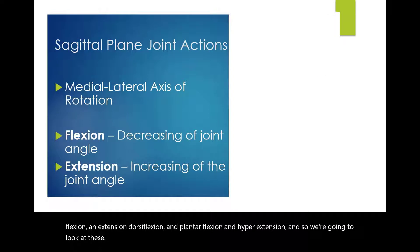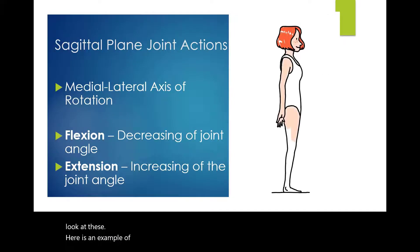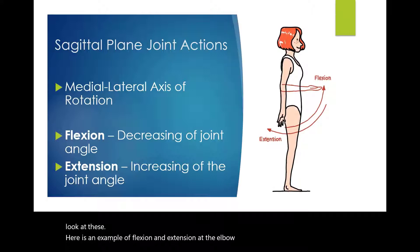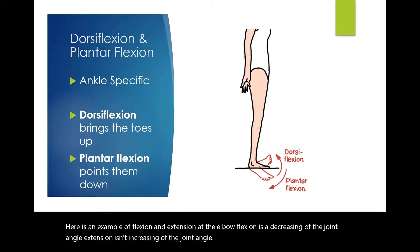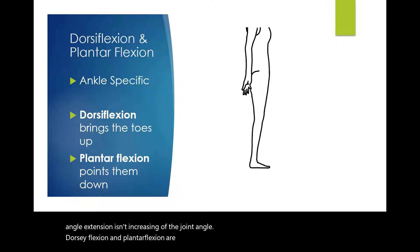Here is an example of flexion and extension at the elbow. Flexion is a decreasing of the joint angle. Extension is an increasing of the joint angle.